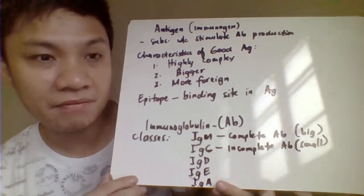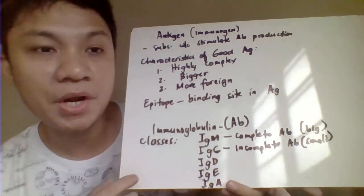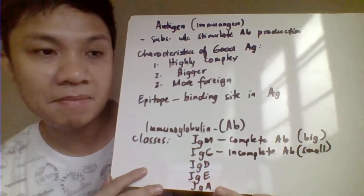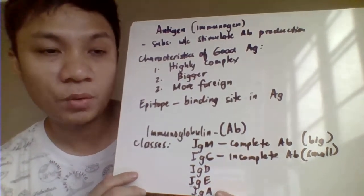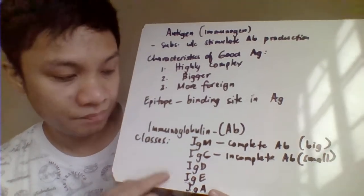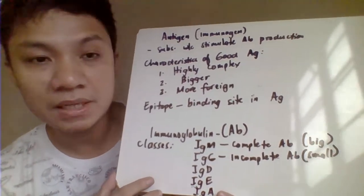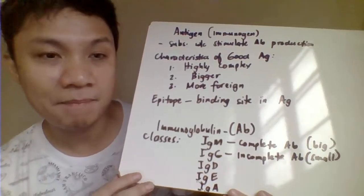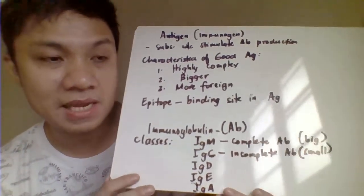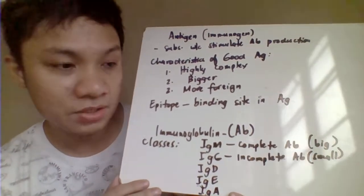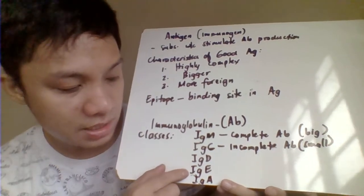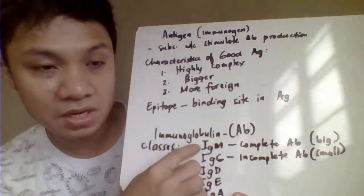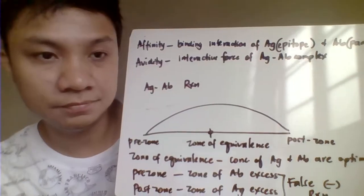IgM is a complete antibody; because of its bigger structure it allows an immediate agglutination reaction. IgG antibody is an incomplete antibody — it's smaller, so for an agglutination reaction, at least two IgG antibodies must be bound to the RBC and must be cross-linked by anti-human globulin for agglutination to occur. IgD and IgE also exist, but what's primarily involved in blood banking are IgM and IgG antibodies.